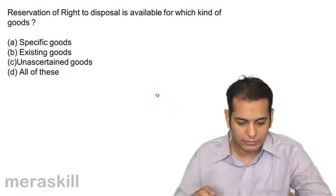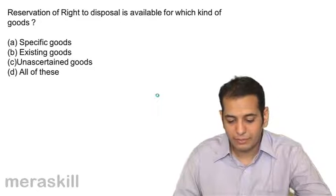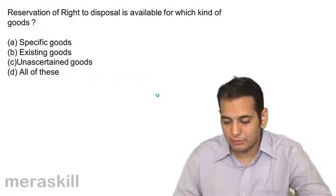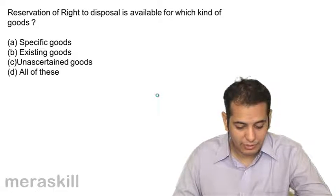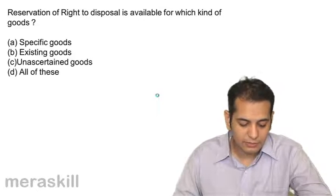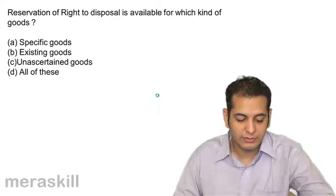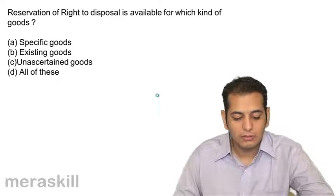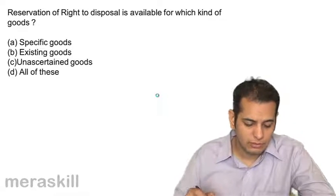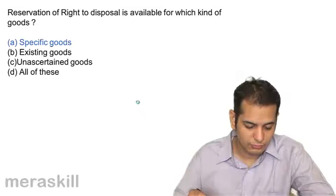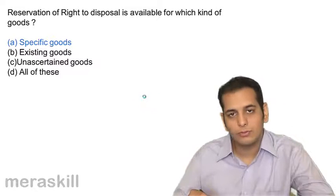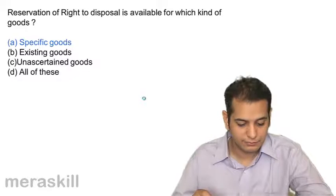Next question: Reservation of right to disposal is available for which kind of goods? A specific, B existing goods, C unascertained goods, D all of these. It is available only for specific goods. That's the answer.